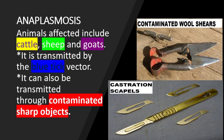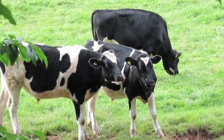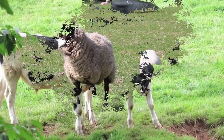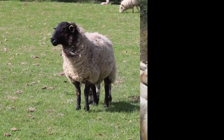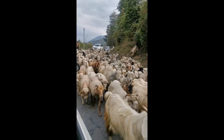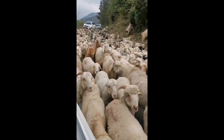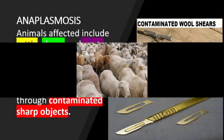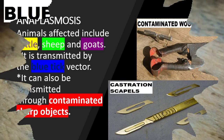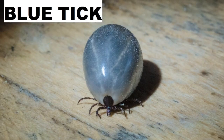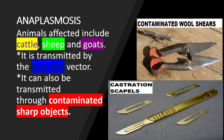Anaplasmosis. Animals affected include cattle, sheep, and goats. It is transmitted by the blue tick vector. It can also be transmitted through contaminated sharp objects.